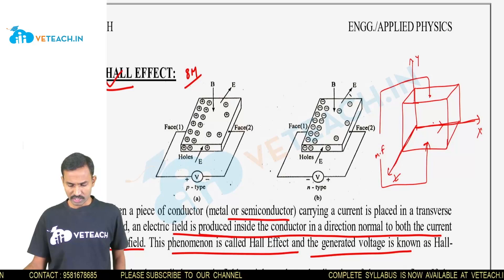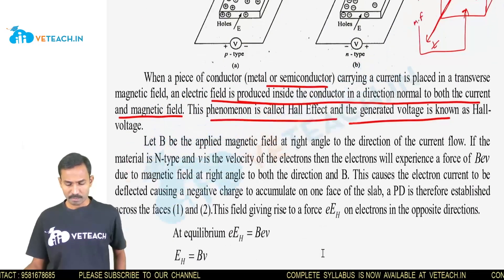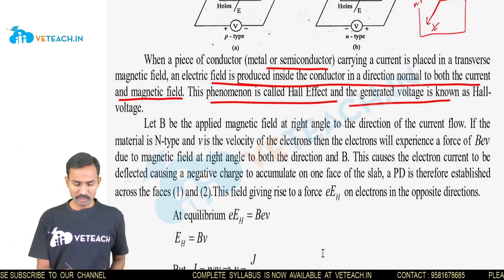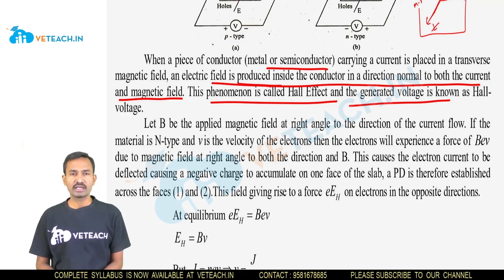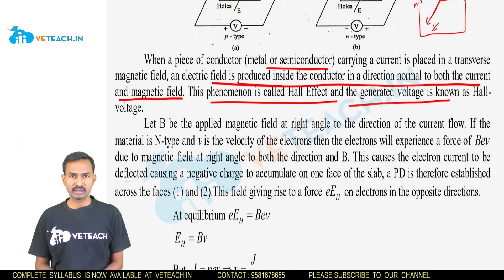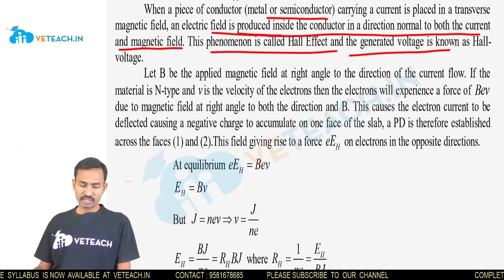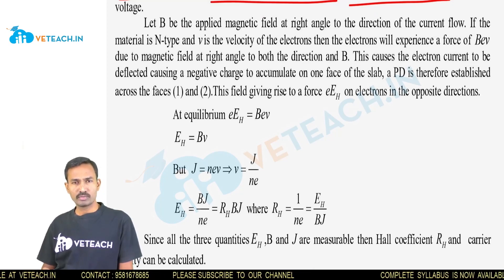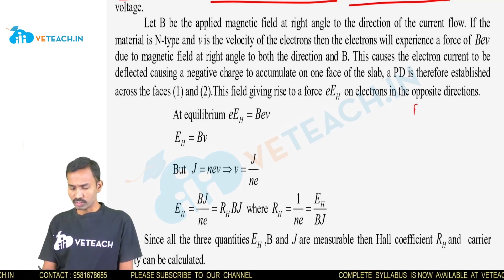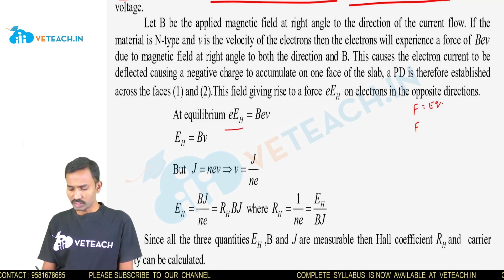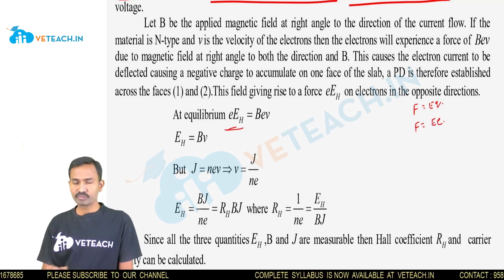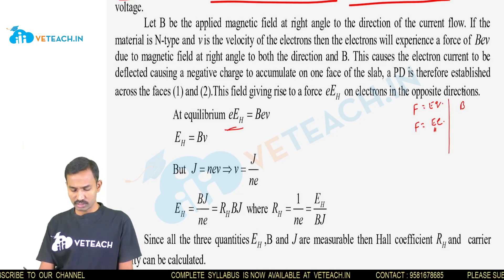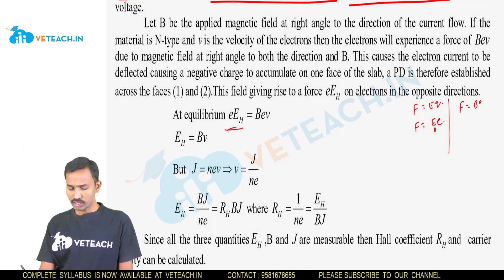There are different types of semiconductors — p-type and n-type. When current passes through a semiconductor and a magnetic field is applied perpendicular to it, an electric field is produced in the perpendicular direction. This phenomenon is called the Hall Effect. Now, the force due to the electric field is F = eE (electric Hall field), and the force due to the magnetic field is F = Bqv, i.e., F = Bevn.